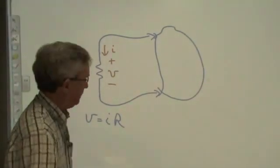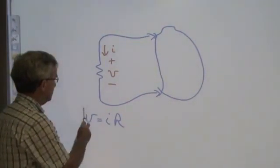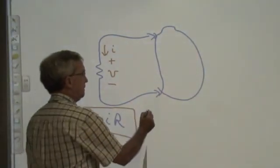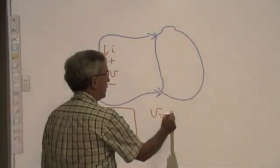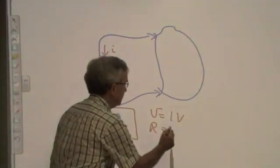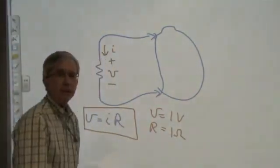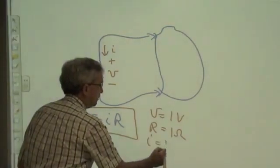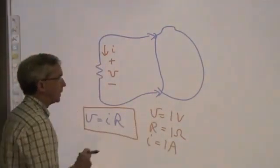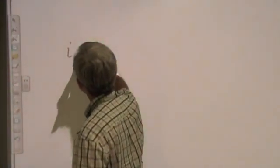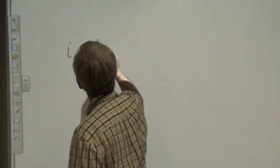This constraint, V equals IR, is known as Ohm's Law. For example, if V equals 1 volt and R equals 1 ohm, then we can say that I equals 1 ampere. So V equals IR, or we could also say that I equals 1 over R times V.